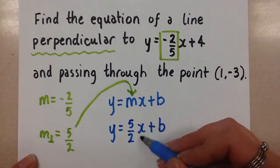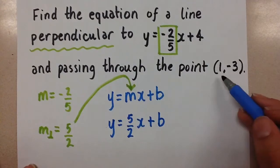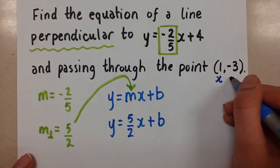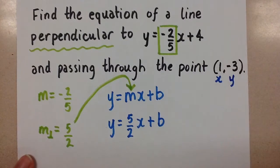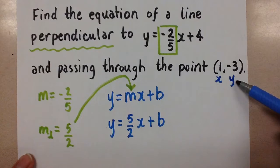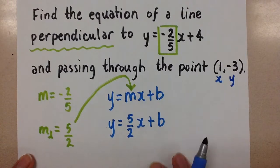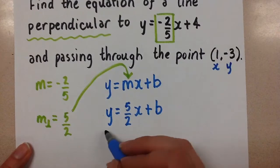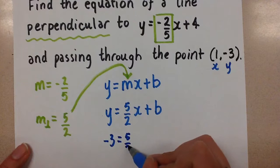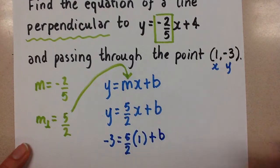The b, the y-intercept, is what we don't know right now and we need to find. But we do know that we have this point on the line. This is the x-coordinate of the point, and this is the y-coordinate of the point. So we're going to substitute in the x value of 1 and the y value of negative 3 into the equation we're working with. So we'll have negative 3 equals 5 over 2 times 1 plus b.